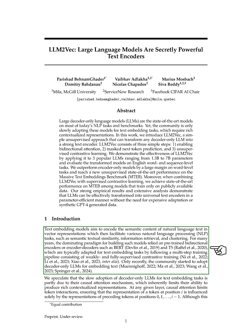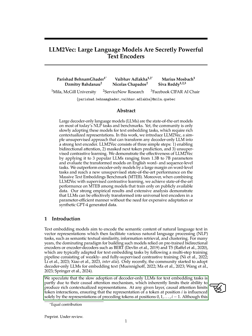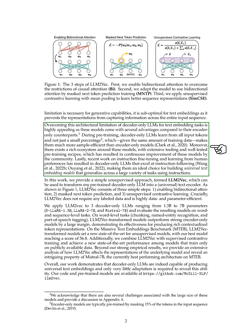Traditionally, models like BERT and T5 were commonly used for this purpose. These models were trained in multiple steps using different types of training methods. Recently, there has been a shift towards using decoder-only models for text embedding tasks. However, these models have a limitation called causal attention, which restricts how tokens interact with each other during encoding. Decoder-only models have some advantages over encoder-only models: they can learn from all input tokens during training, making them more efficient in using training data.